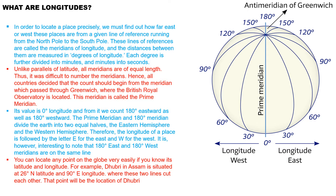You can locate any point on the globe very easily if you know its latitude and longitude. For example, Dibrugarh in Assam is at 26 degree north latitude and 90 degree east longitude. Starting from the equator, we go 26 degrees north on the parallel line. From the prime meridian at zero degrees, we go eastward to 30, 60, and then 90 degrees. Where these two lines intersect is the location of Dibrugarh.